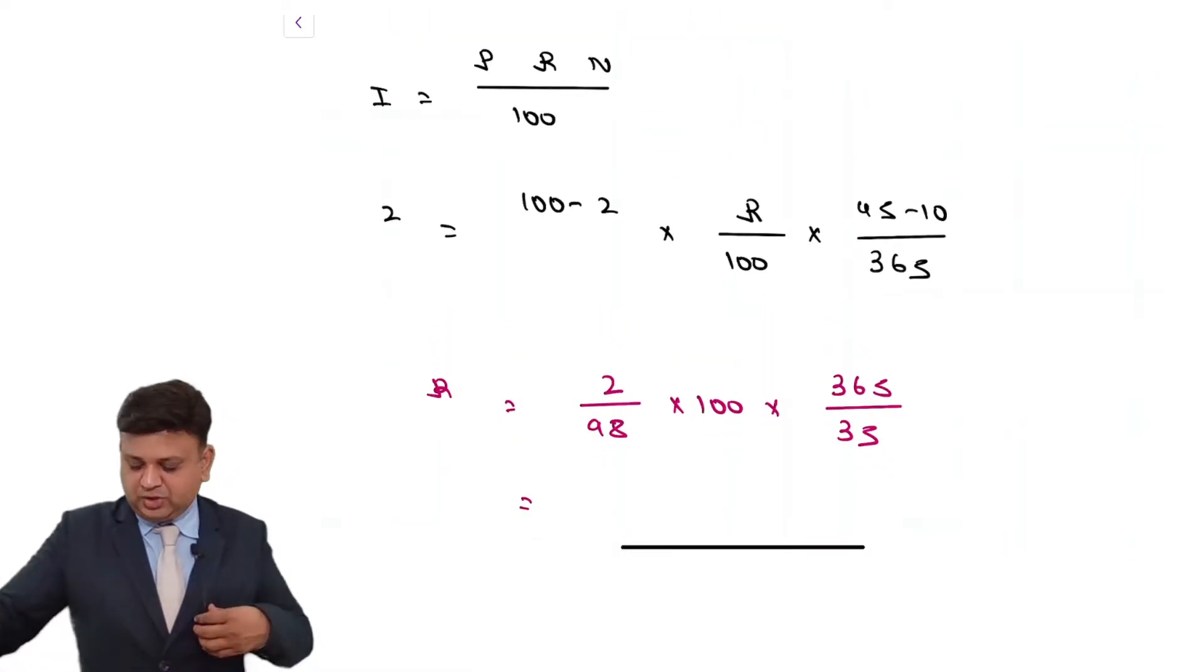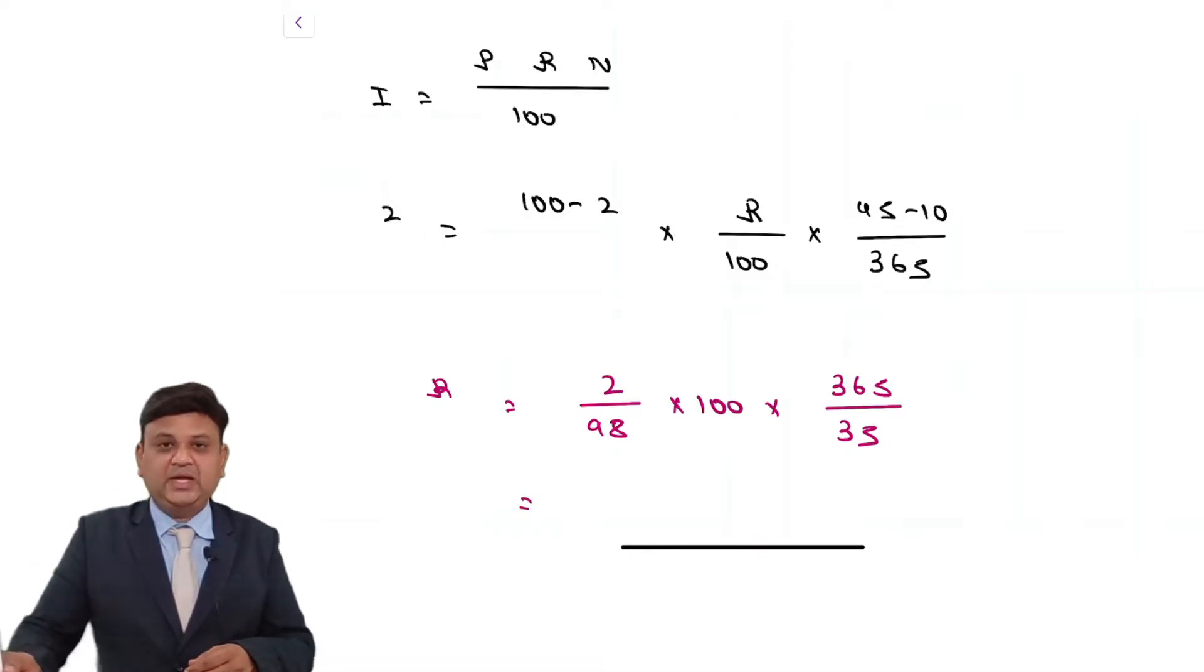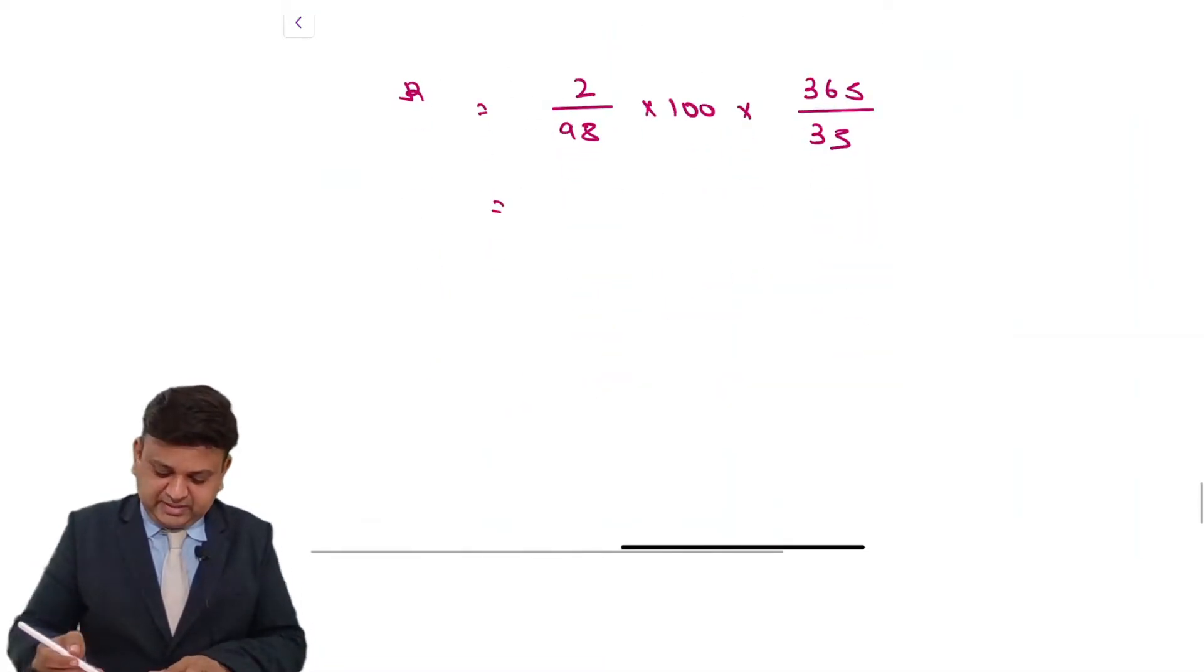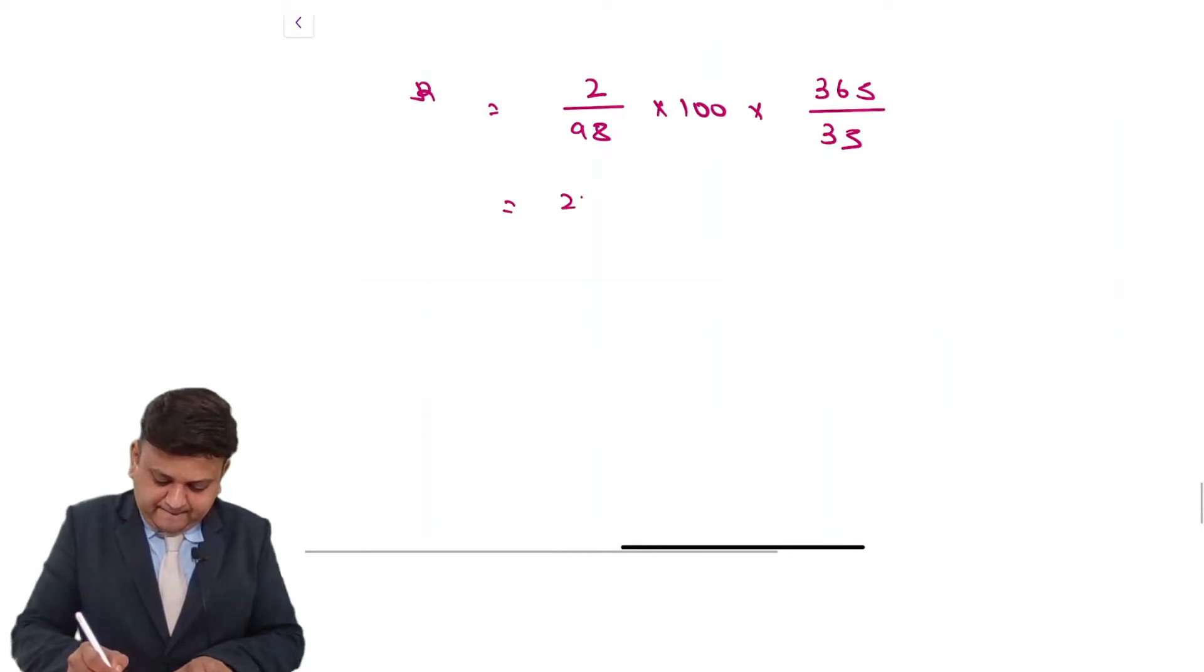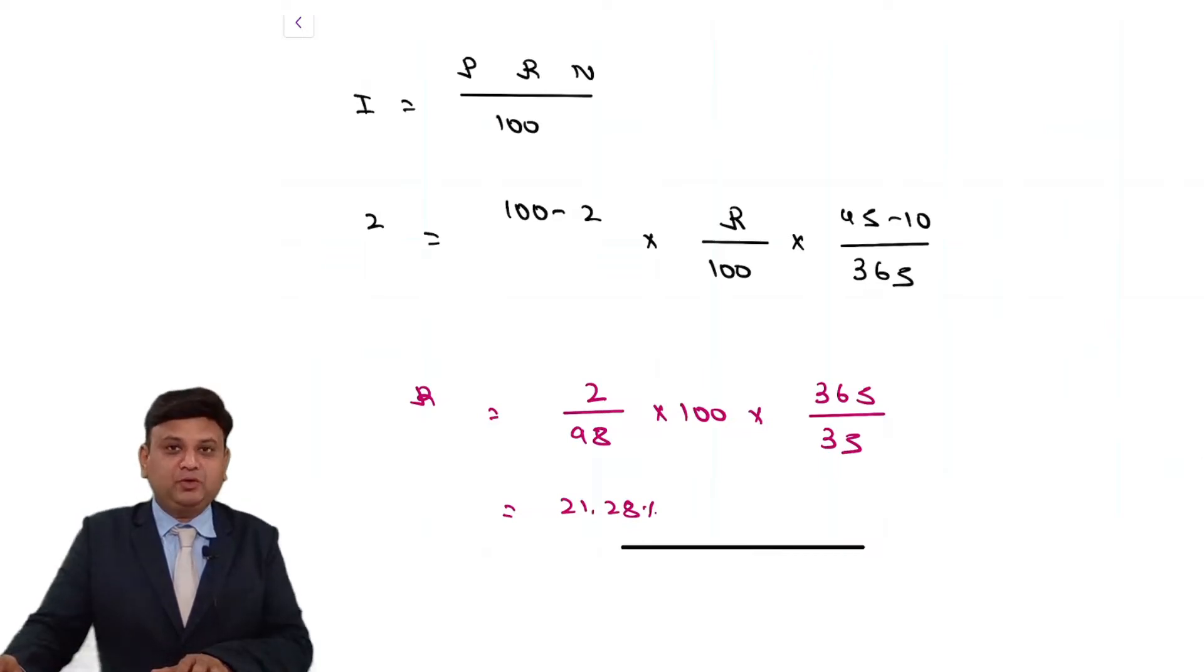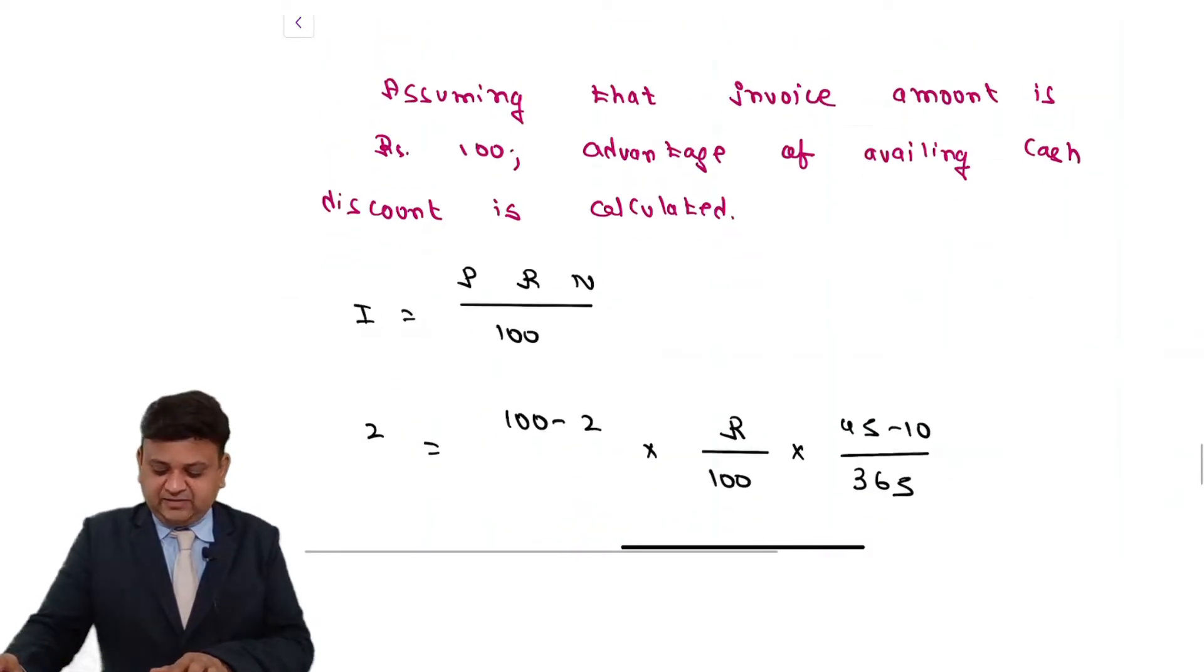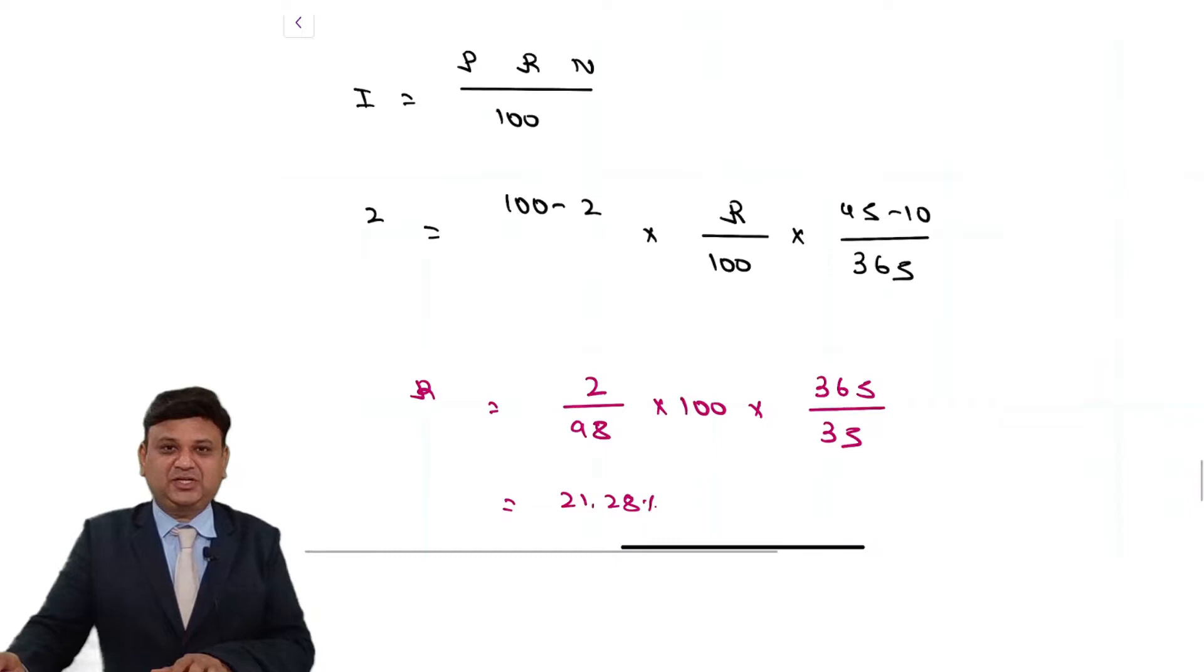So use your calculator: 2 into 100 into 365 upon 98 upon 35, that comes to 21.28%. This is the way we are supposed to compute what is the advantage of availing the cash discount.